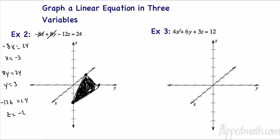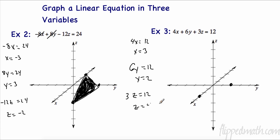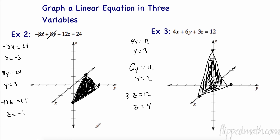For the next example, the x-intercept: 4x = 12, so x = 3. The y-intercept: 6y = 12, so y = 2. The z-intercept: 3z = 12, so z = 4. Plot those three intercepts — one, two, three on x; two on y; one, two, three, four on z — connect them, and the shaded triangular area is the graph.